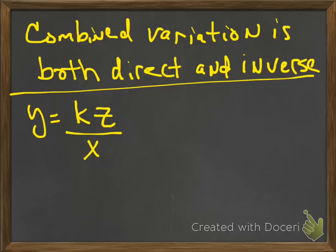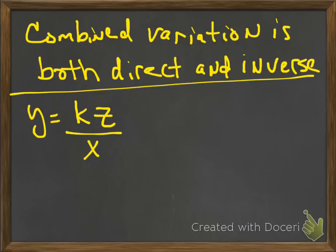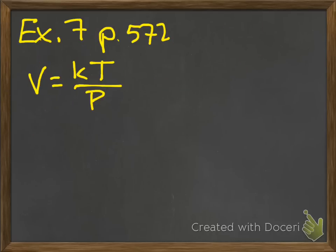Okay, the last type of variation is a combined variation. A combined variation is both direct and inverse: y is equal to k times z divided by x. So make sure you have that. Look at example number 7 that's found on page 572 in the book. It talks about the volume of a gas that varies inversely as the pressure P and directly as the temperature T. So the varies inversely means that's the one that gets divided by. The directly is the one that multiplies. So you can see here, the volume is equal to k times T divided by P.